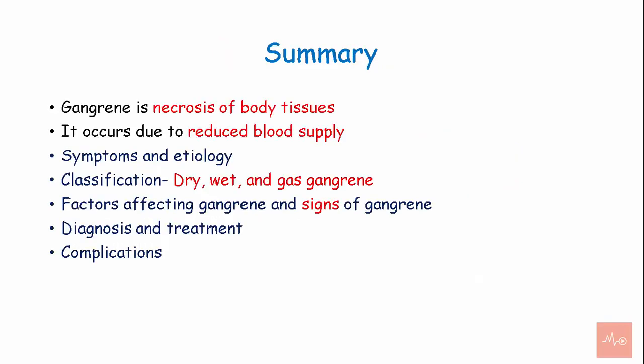To summarize, gangrene is necrosis of body tissues and occurs due to reduced blood supply. We studied the symptoms and etiology, the classification — dry, wet, and gas gangrene — factors affecting gangrene, and the signs of gangrene. We also went through the diagnosis, treatment, and complications of gangrene.